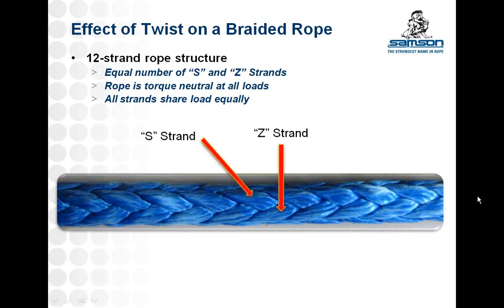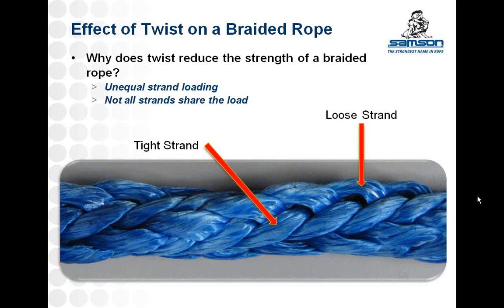As we can see here, we have a 12-strand braided rope that has no significant twist. In a braided rope, there's an equal number of S and Z strands. The S strands shown here twist to the left, and the Z strands twist to the right. Since the twist in these strands is equal and opposite, the construction of the rope is balanced. All of the strands are sharing the load relatively equally, and the rope is torque neutral at all loads. If a load is placed on the rope, it will not have a tendency to spin or unwind like a laid rope.